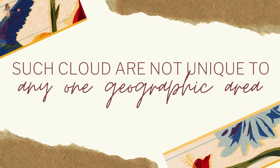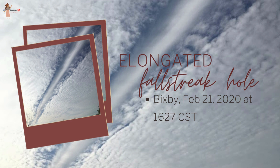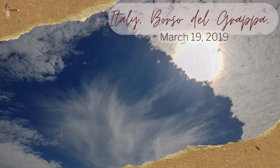Such clouds are not unique to any one geographic area and have been photographed from many places. This is a fallstreak hole from Leeds, United Kingdom, taken on January 18, 2022. Elongated fallstreak hole over Bixby, February 21, 2020. Fallstreak, Italy, Borso del Grappa, March 19, 2019.